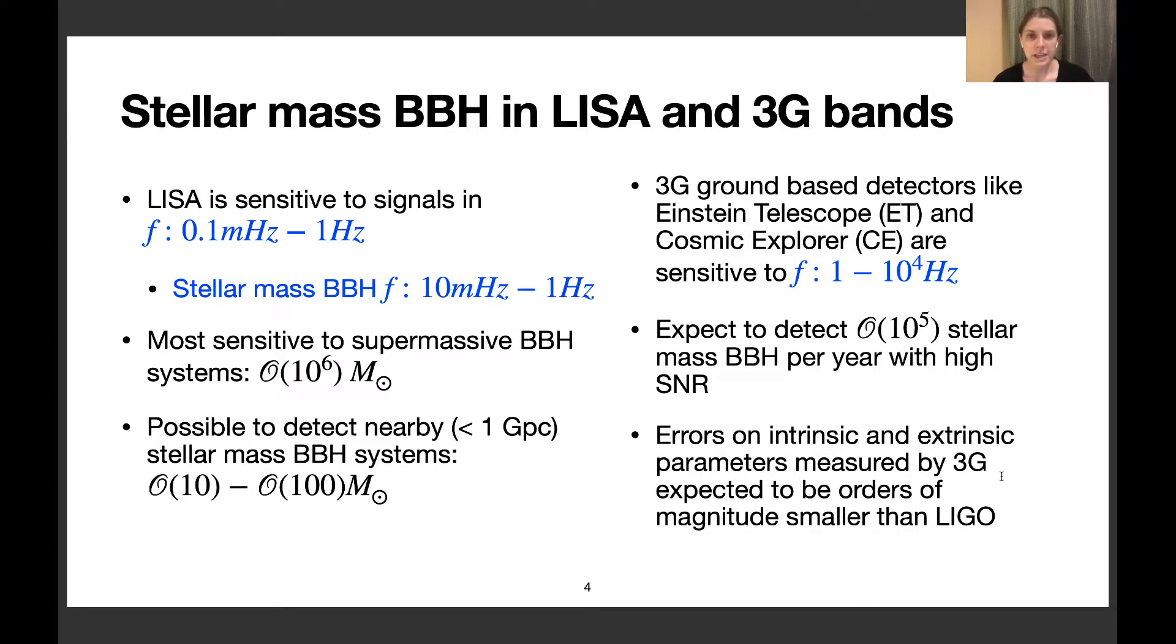Third-generation ground-based detectors like Einstein Telescope and Cosmic Explorer are most sensitive to the frequency band 1 to about 10^4 hertz. We expect to detect many stellar mass binary black holes with 3G every year with very high SNR. From 3G, the errors on intrinsic and extrinsic parameters are expected to be orders of magnitude smaller than LIGO.